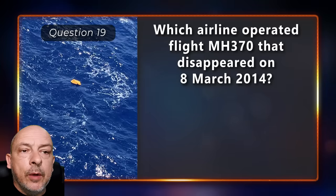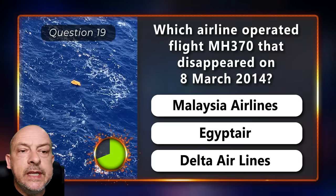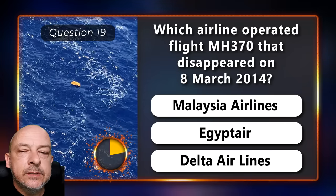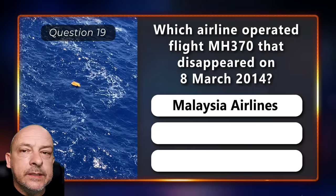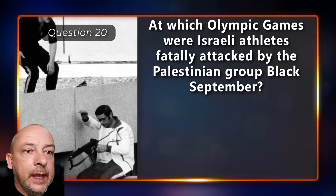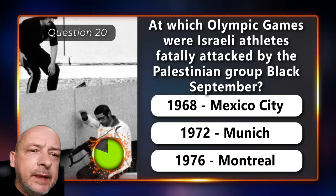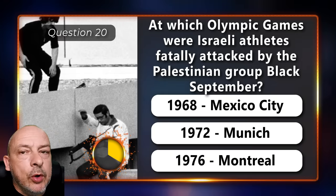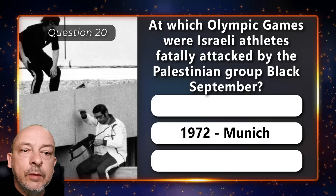Which airline operated flight MH370 that disappeared in 2014 — Malaysia Airlines, EgyptAir, or Delta Airlines? Malaysia Airlines. At which Olympic Games were Israeli athletes fatally attacked by the Palestinian group Black September — Mexico City, Munich, or Montreal? The Munich Olympics.